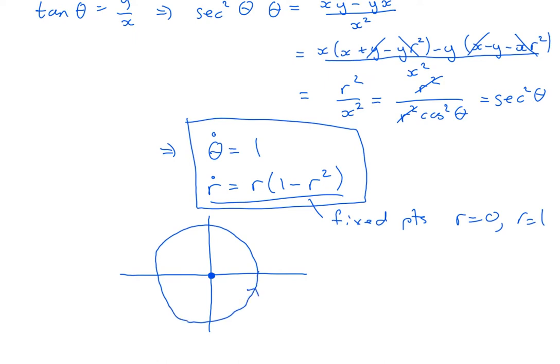Which means I've got a periodic solution. In fact, it's just x is going to be equal to cos t and y is going to be equal to sin t.